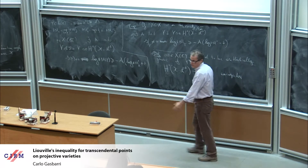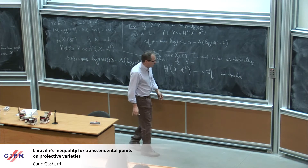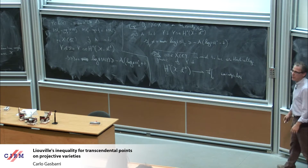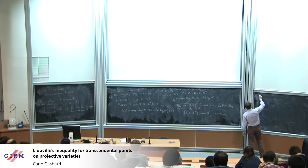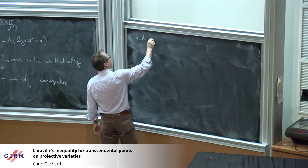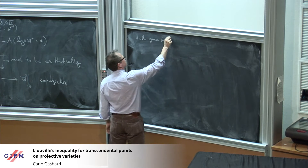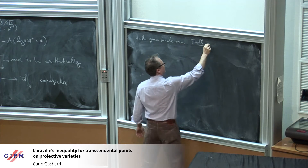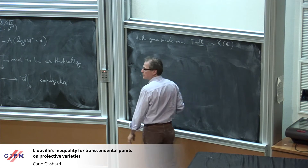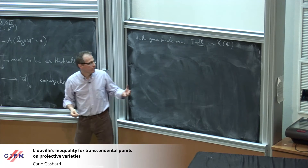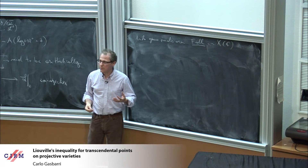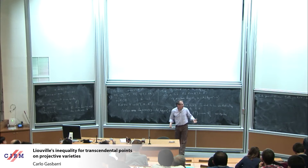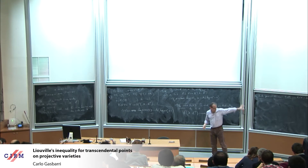Of course it is not dense over C — it is a point. A simple application of Baire's theorem says that arithmetically generic points are full in X(C). Full means that the complementary is of Lebesgue measure zero, so essentially you can think all the points are arithmetically generic. This is very easy to prove.